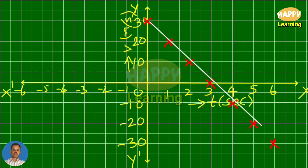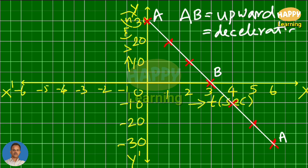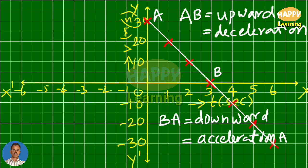Joining these points gives a straight line. A to B in the first quadrant represents upward motion, indicating deceleration. B to A in the fourth quadrant represents downward motion, indicating acceleration in the reverse direction. Okay, right. Thank you.